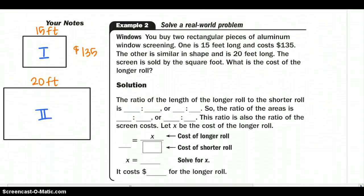Continuing on with our next example, we are buying two rectangular pieces of aluminum window screening. One is 15 feet long and costs $135. The other, similar in shape, is 20 feet long. The screen is sold by the square foot, and we know square feet tells us about our area. So what's the cost of the roll?